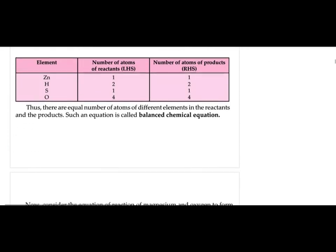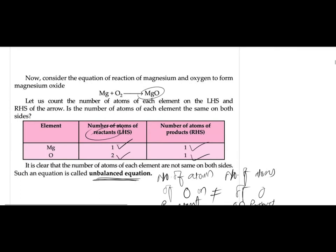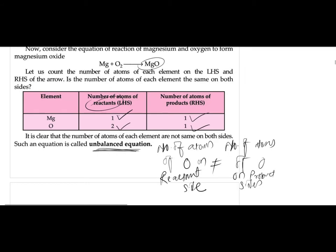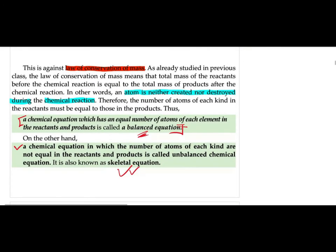We took another example of magnesium and oxygen, which was unbalanced — the number of oxygen atoms on the reactant side was not equal to the number on the product side. An unbalanced equation implies atoms were destroyed, which is not possible. Atoms can neither be created nor destroyed — that is a universal law, and it applies to chemical change. That is why a chemical equation must be balanced.